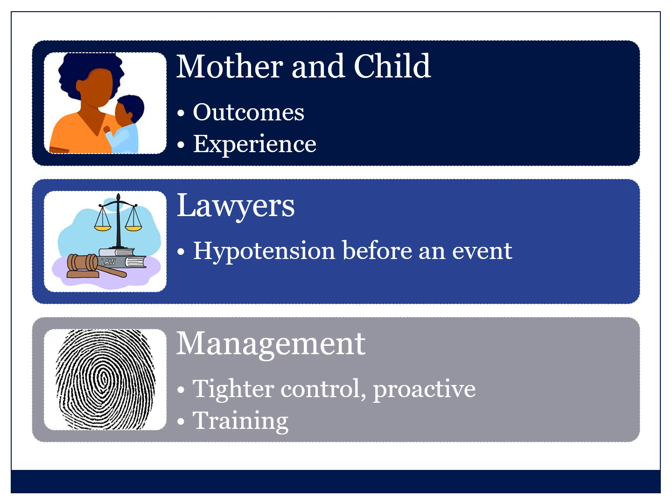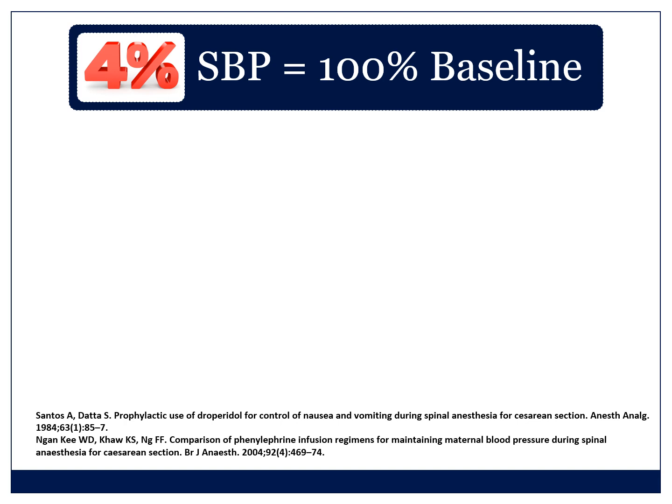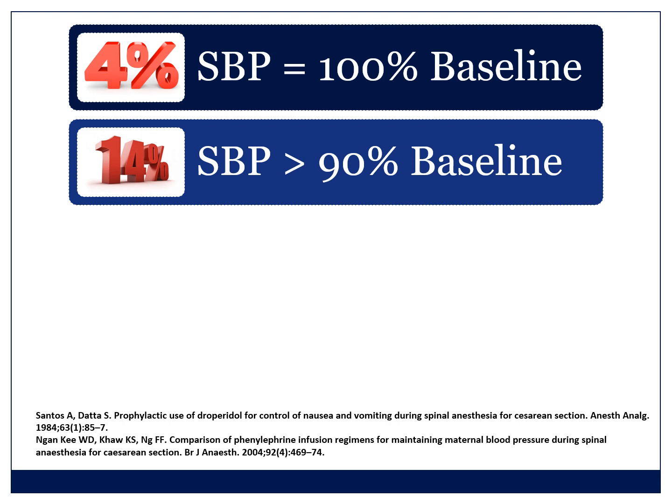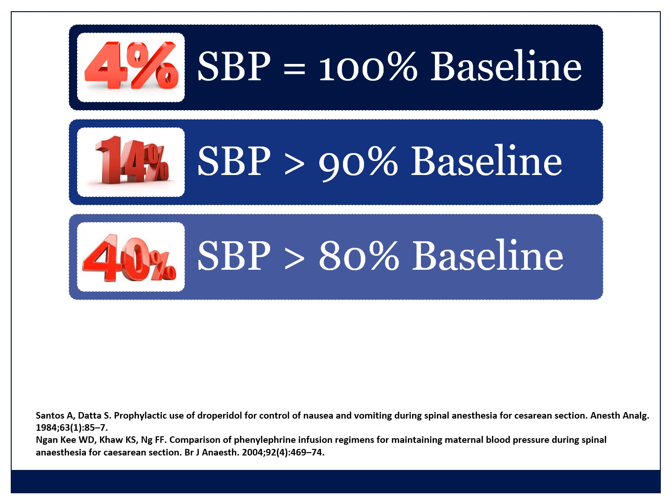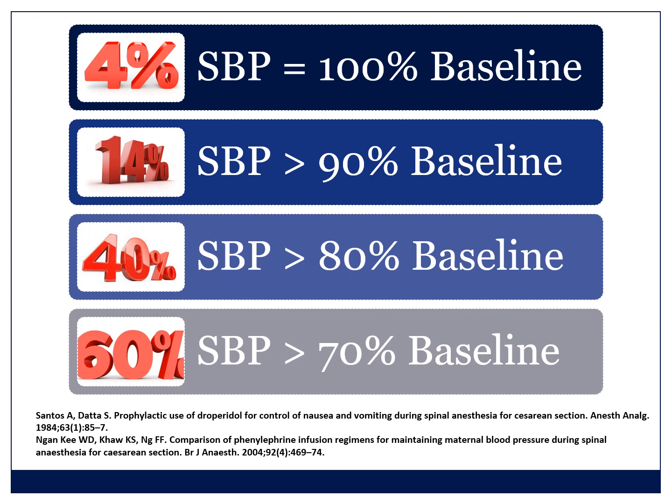One of the things I mentioned is that hypotension is unpleasant for the mother. Looking at intraoperative nausea and vomiting — both nausea and vomiting — it has a 4% incidence during obstetric spinal anesthetic if you keep the systolic blood pressure at 100% of baseline. If you let it drop to 90%, 14% of patients have nausea and vomiting intraoperatively. At 80% that number goes to 40%, and if you let it drop to 70% of baseline, 60% of patients will have intraoperative nausea and vomiting. This alone is a reason to treat obstetric spinal hypotension.